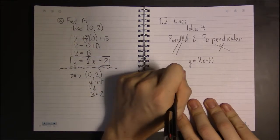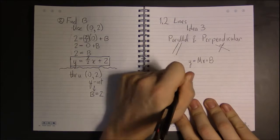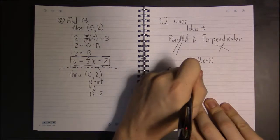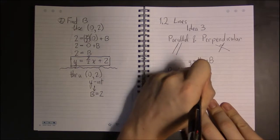So for two parallel lines, their slopes are going to be the same.